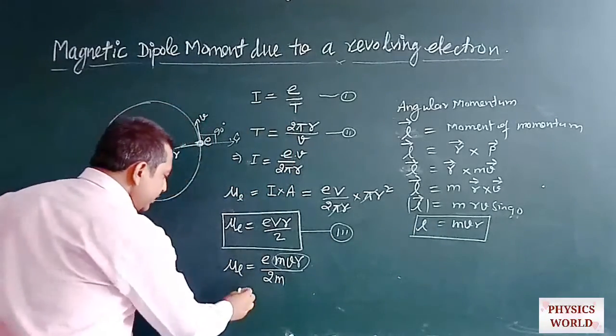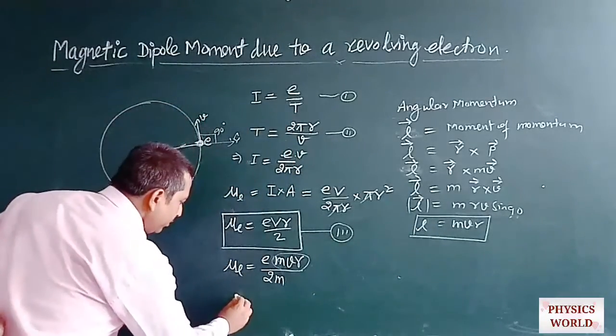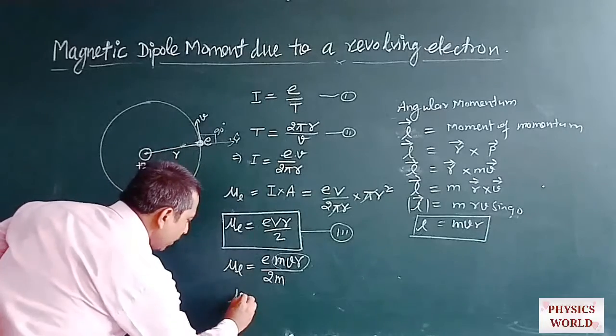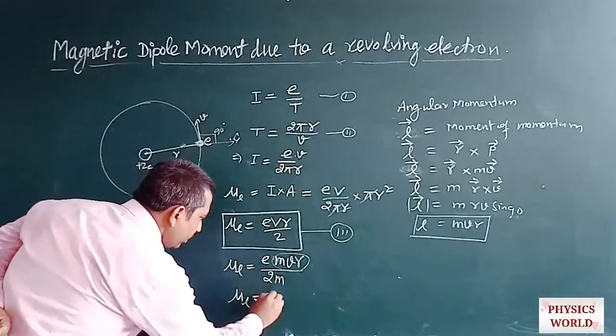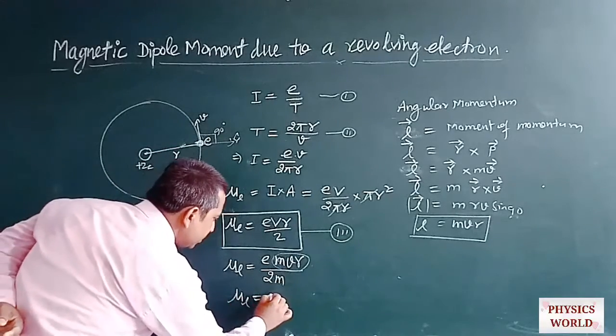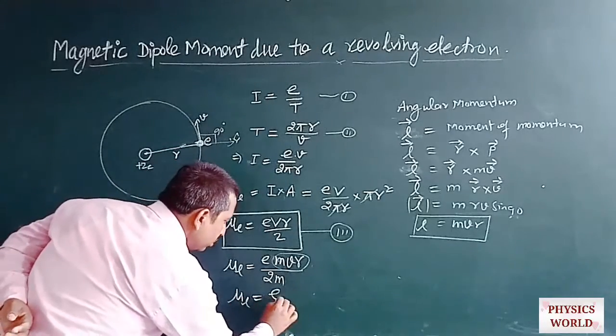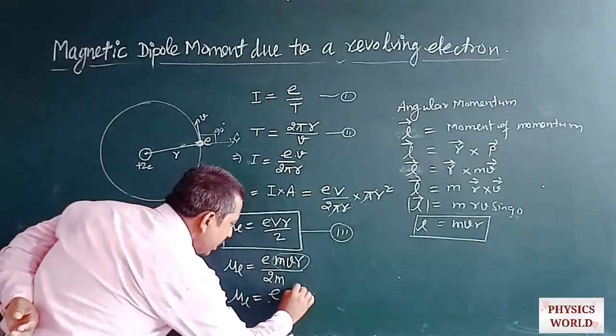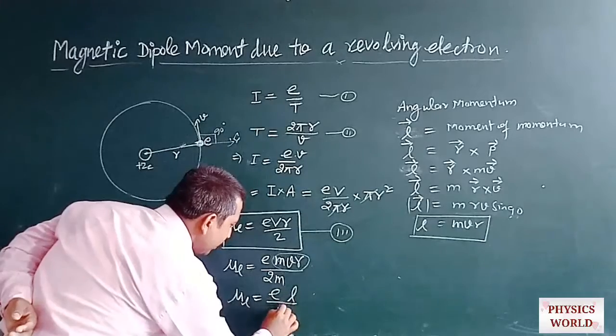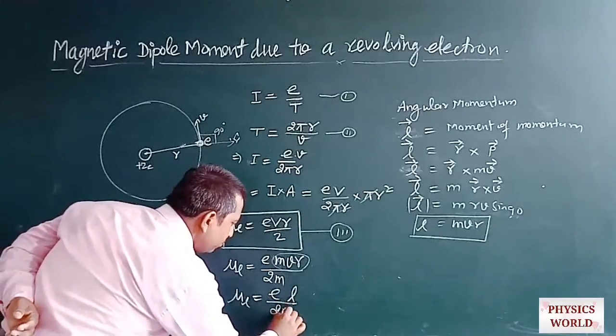From here, μL becomes E·L divided by 2m. This is equation number 4.